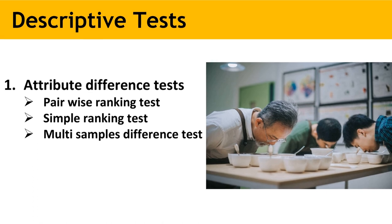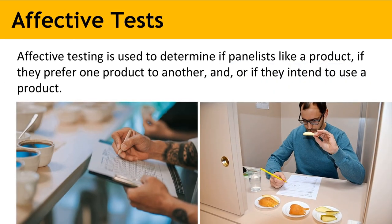Affective testing is used to determine if panelists like a product, if they prefer one product to another, and or if they intend to use a product. These types of evaluation may appear to be identical. However, it is possible for a judge to show a strong preference for a sample, but not use it or accept it for reasons other than its likability. Affective tests may be called acceptance, preference, or consumer tests.